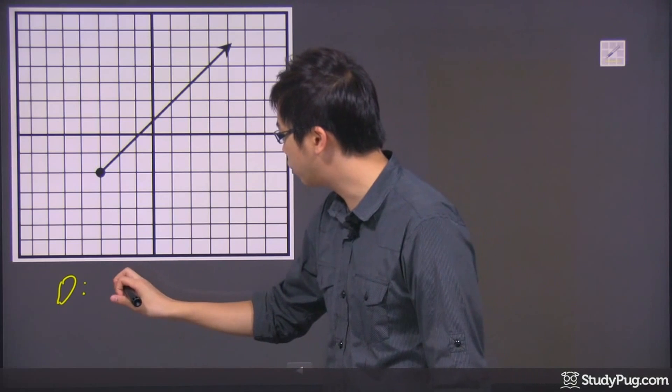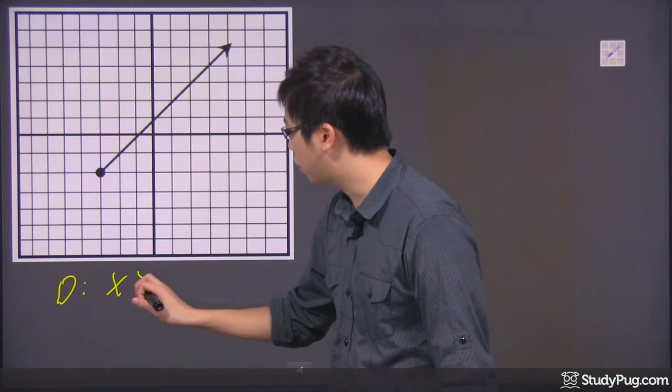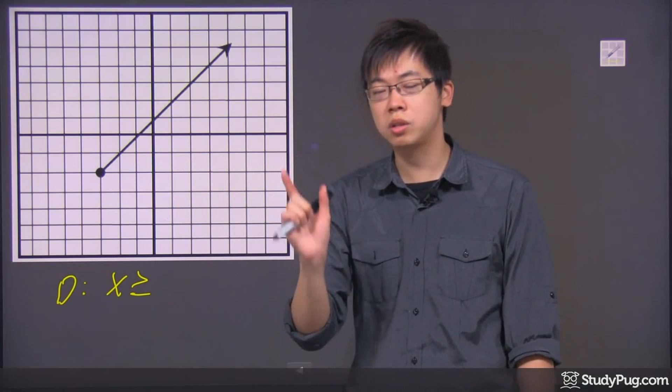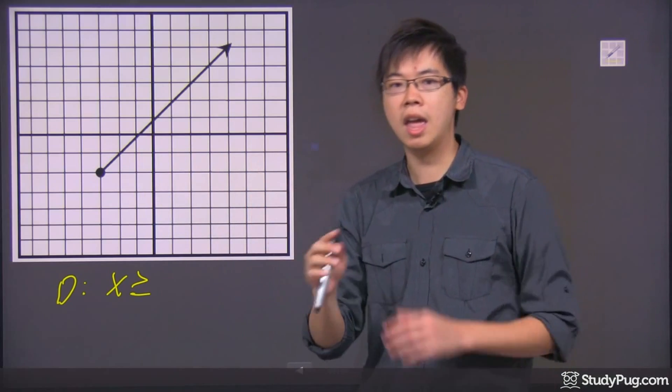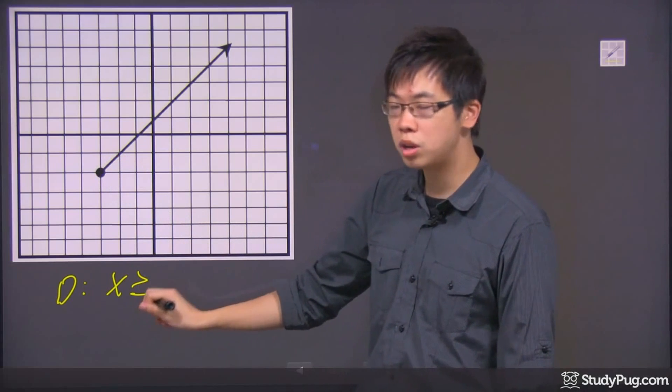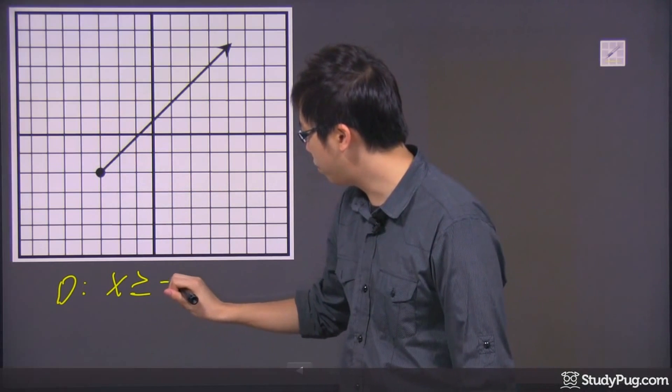Well, there's a couple of different ways. I can write down my x is greater than and equal to, because that's a closed dot. There's a difference between a closed dot and an open dot. So in this case, the x is greater than or equal to negative three.